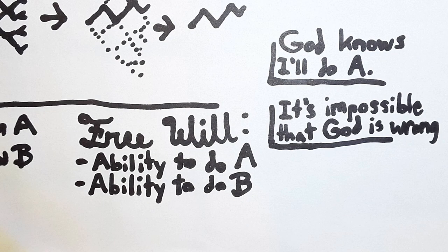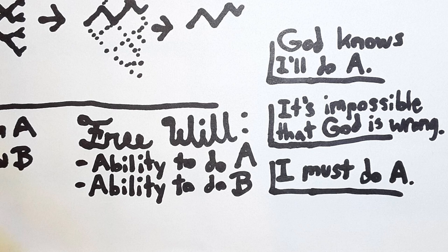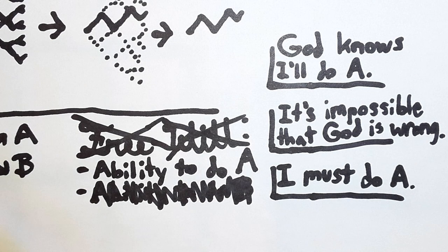and it's impossible for God to be wrong. So it's impossible for me to do B, and I must do A. Thus, I don't really have the ability to do B, and I don't really have free will.